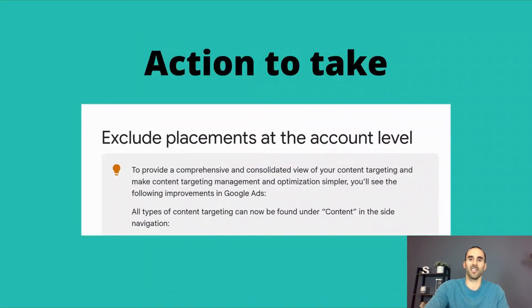The action to take is very simple: scan the list of apps and URLs and websites that your ad is appearing on, and if there are any that do not align, add them as an account-level placement exclusion.